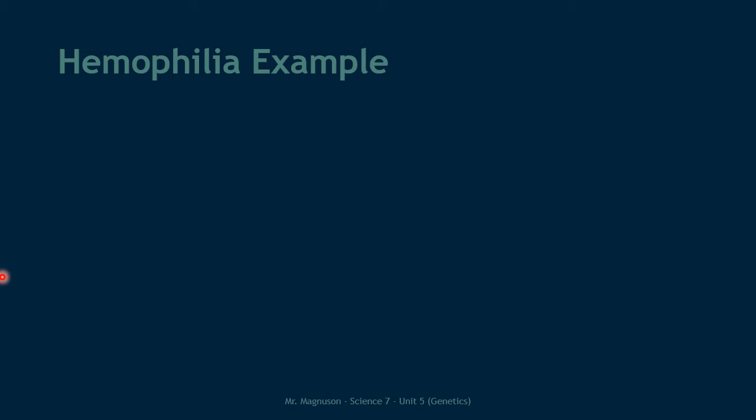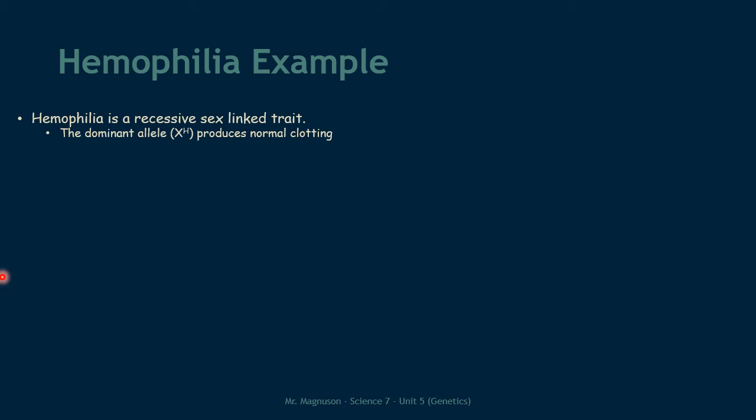Because we are dealing with Mendelian dominant-recessive relationships with a little twist, we are going to use Punnett squares, and we will use hemophilia as our example. Hemophilia is a recessive sex-linked disorder — it is a disease where your blood cannot clot, meaning a small cut could cause you to bleed a lot and possibly die. The dominant allele, X with a capital H, produces normal blood clotting. The recessive allele, X with a lowercase h, produces hemophilia.